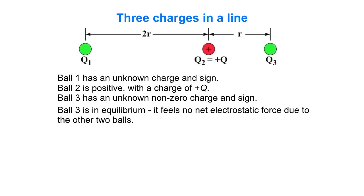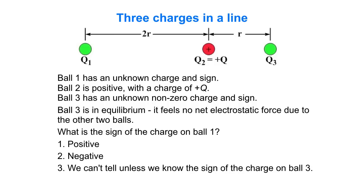Our goal here is to say something about ball number one. Ball three is in equilibrium—it feels no net electrostatic force due to the other two balls. What is the sign of the charge on ball one? Positive, negative, or can we not tell unless we know the sign of the charge on ball three? Think about that question and then we'll start addressing it.